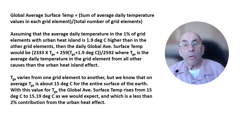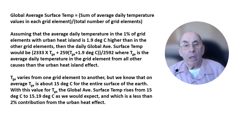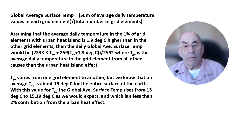The calculation of the contribution from the urban heat island effect to the overall global average surface temperature is a bit complicated — we'll go through it step by step. We need to add up the average daily temperature values in each of the grid elements and then divide by the number of grid elements. 2,333 grid elements have average temperature values that include no contribution from the urban heat island effect. We will designate the average daily temperature in those grid elements as T sub GE, where the T sub GE value differs from one grid element to another. Note that T sub GE refers to the contribution to the grid element temperature from all causes other than the heat island effect.